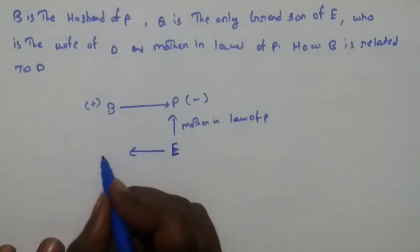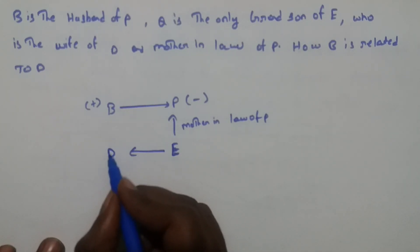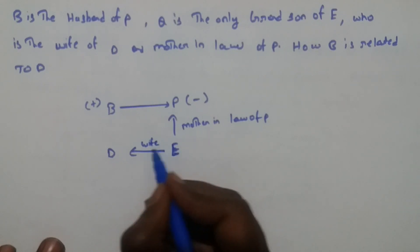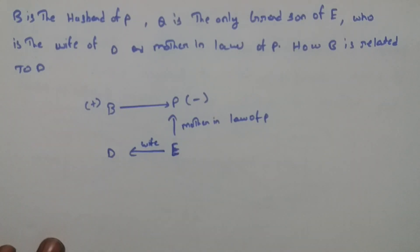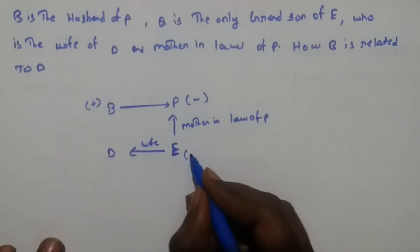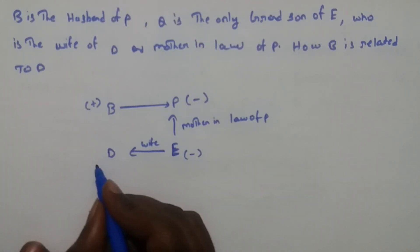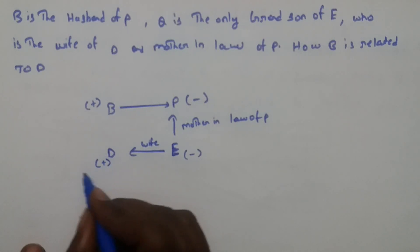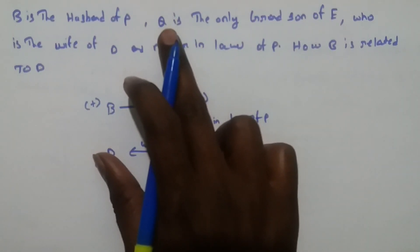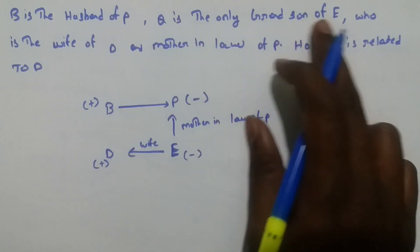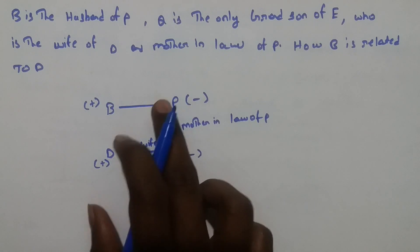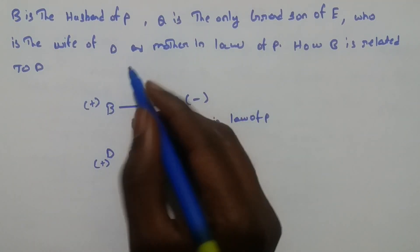E is the wife of D, so E is female and D is the husband. Now going to the second generation — Q is the only grandson of E, so that is the first generation relationship.